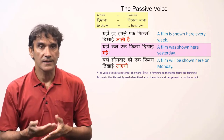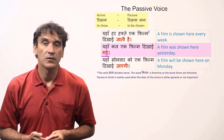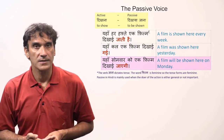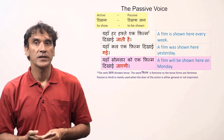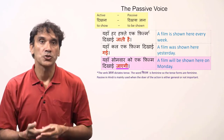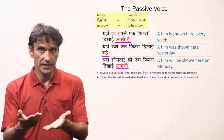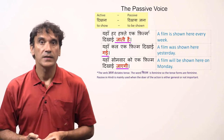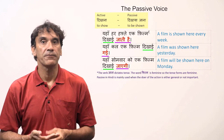'Yaha kal ek film dikhai gai' — a film was shown here yesterday. In this sentence the tense is past, so the verb 'jana' takes the past tense form 'gai'; 'dikhai gai' means was shown. In the future tense, 'a film will be shown here on Monday,' the verb 'jana' becomes 'jayegi.' So 'jana' dictates the tense: 'jati hai' for present, 'gai' for past, and 'jayegi' for future. The noun 'film' is feminine, so the perfective participle takes the feminine form.